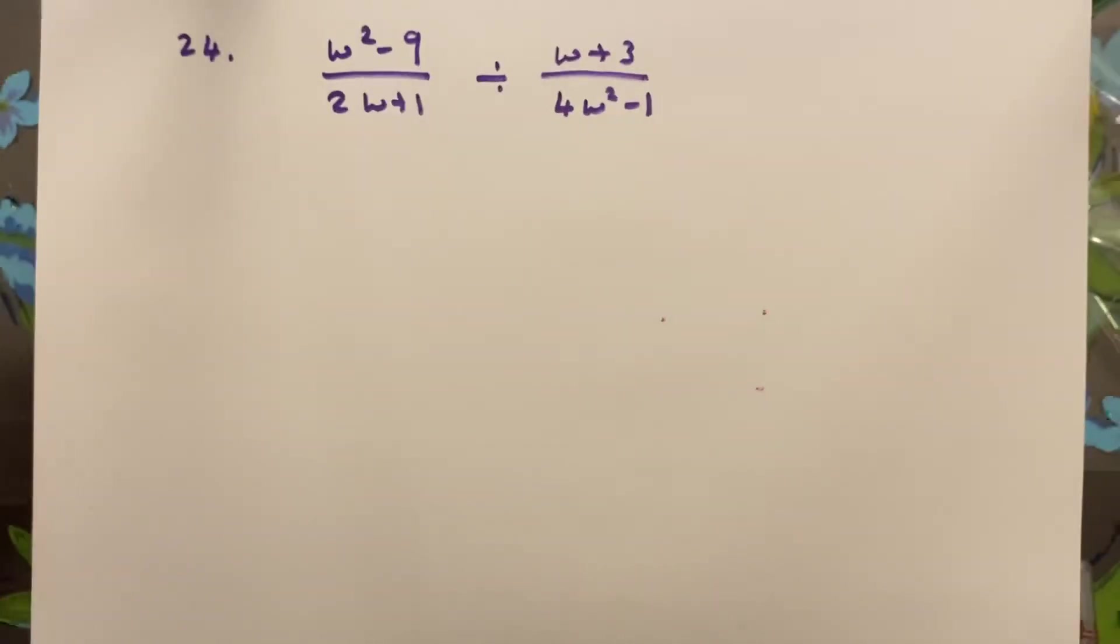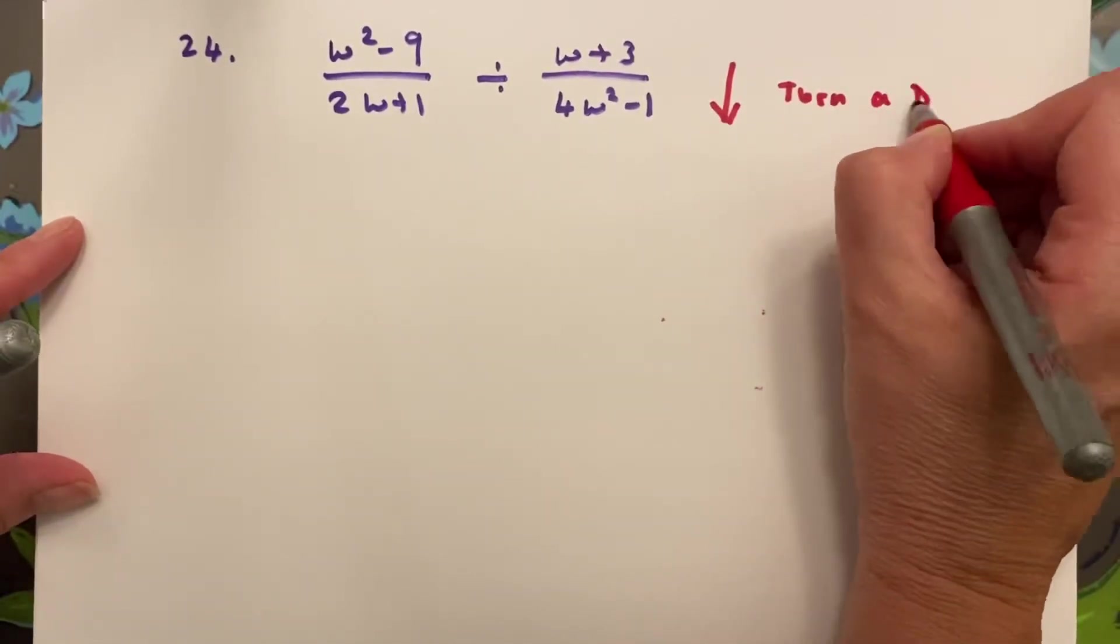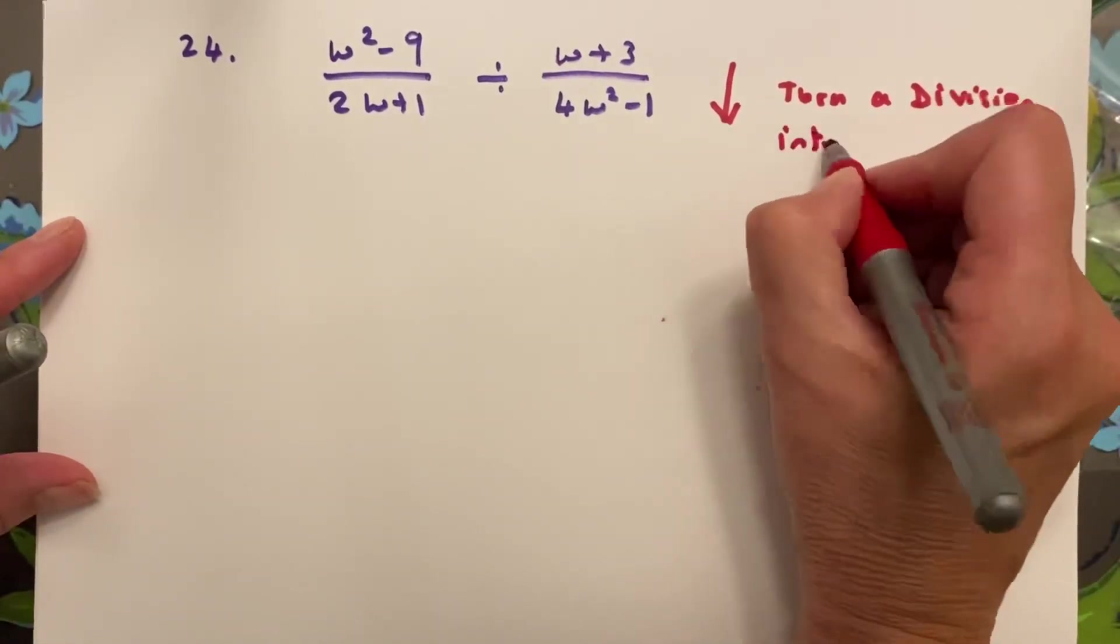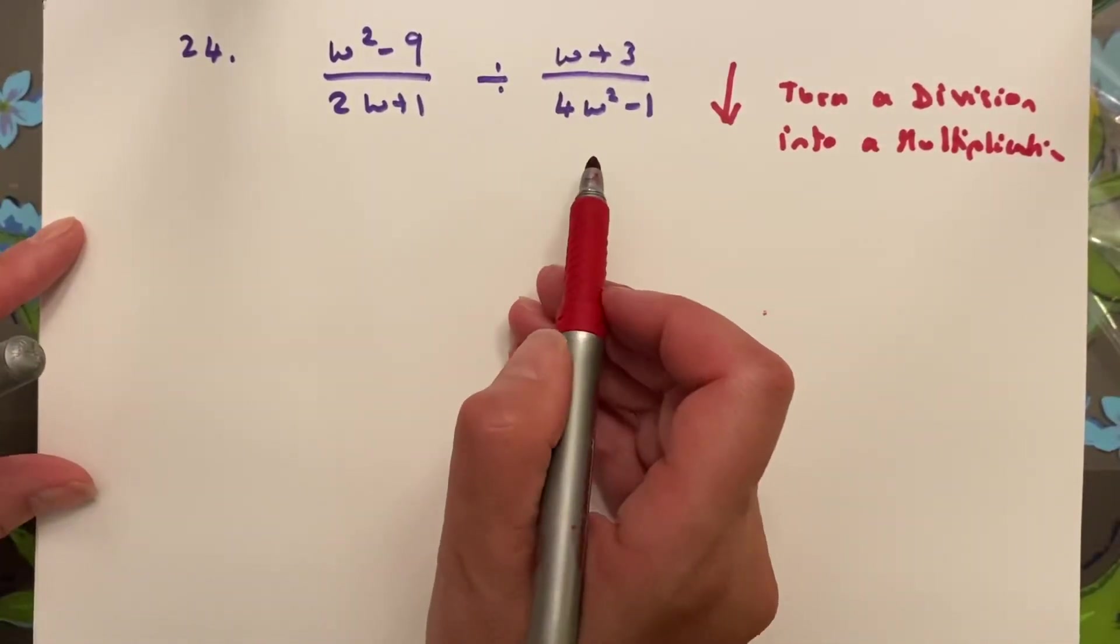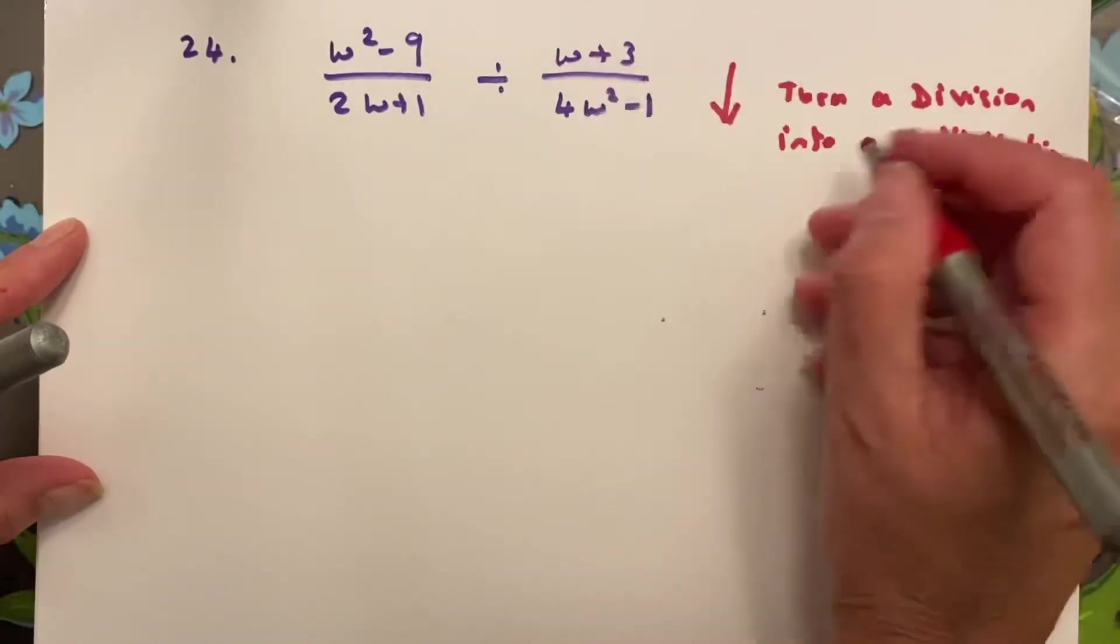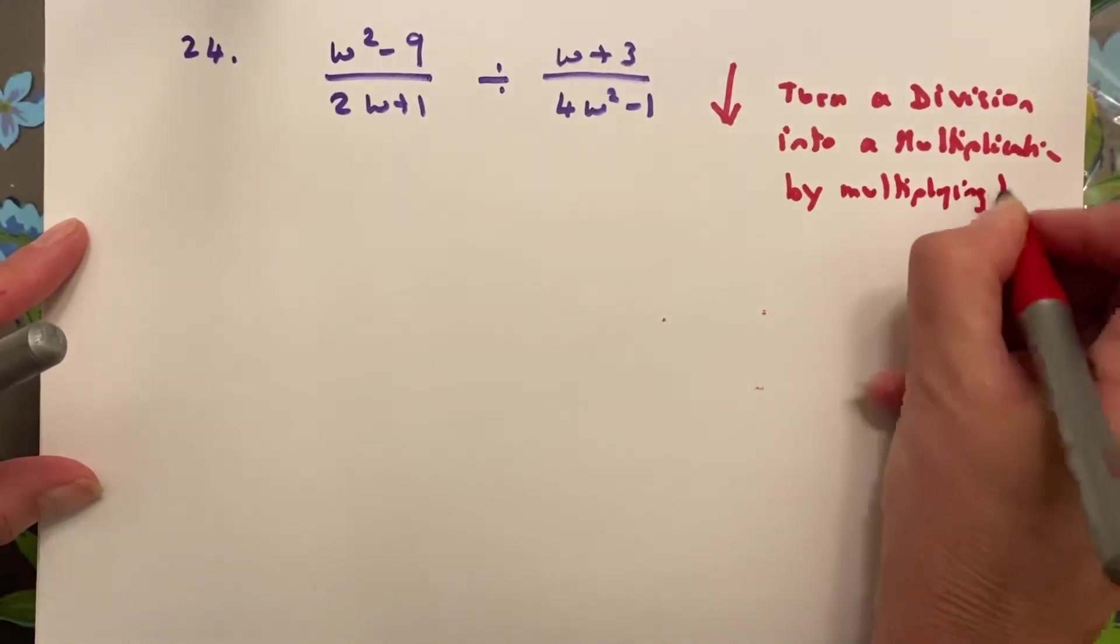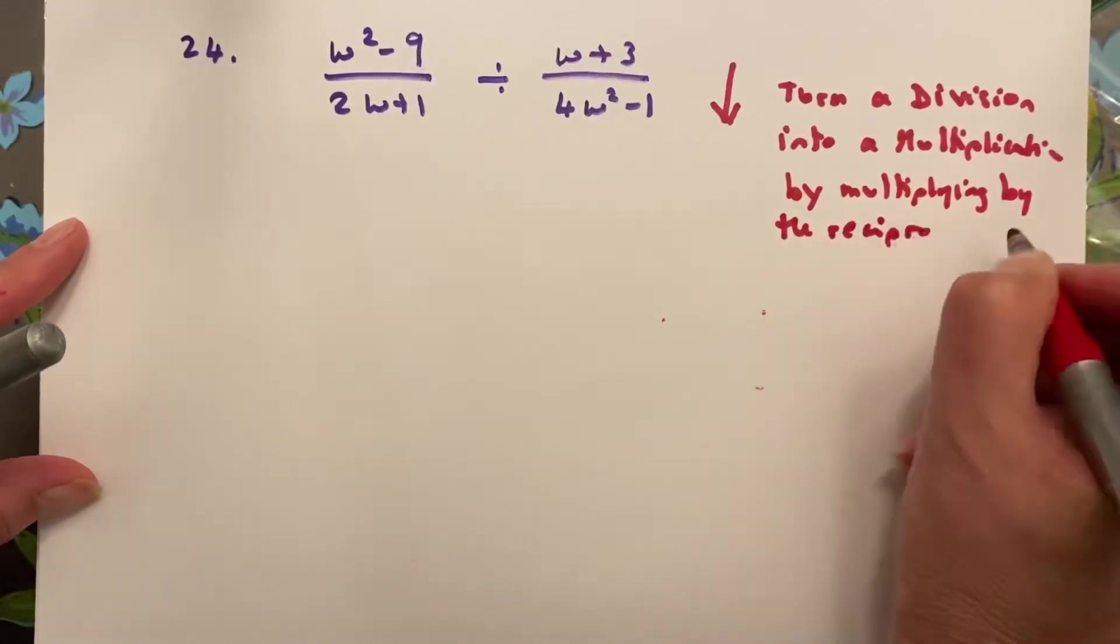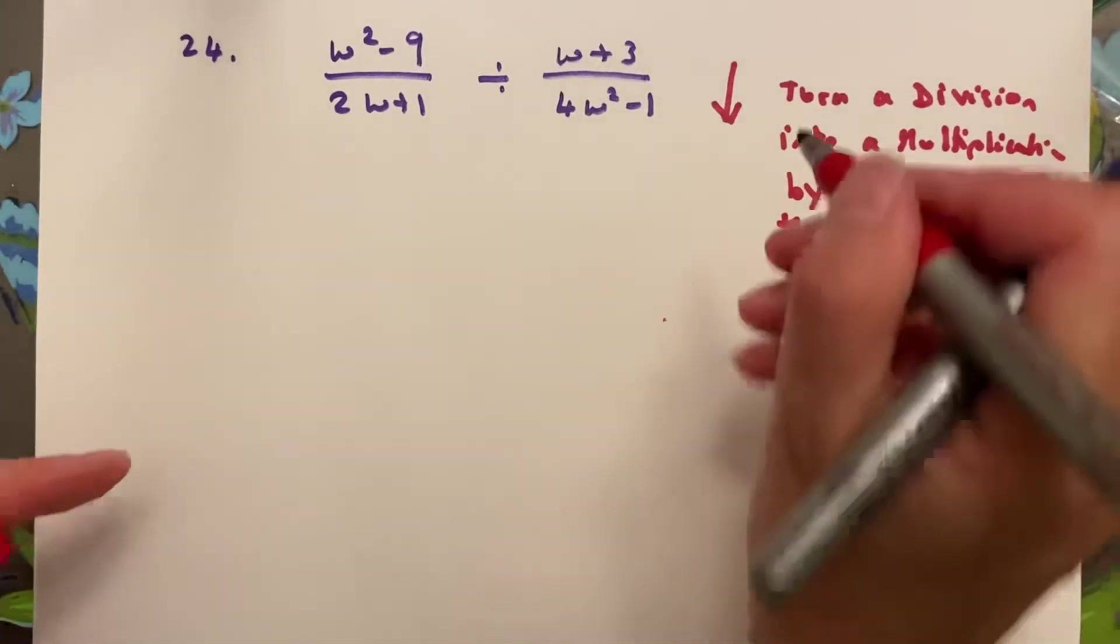When you do a division, the first step is really to turn it into a multiplication. So your first step is turn a division into a multiplication. And how we divide any fraction - you multiply by the reciprocal. You've been doing this since you were little, so I'm going to do the same thing with rational expressions by multiplying by the reciprocal. Math is always the same principles, so as long as you follow math rules I always do okay.